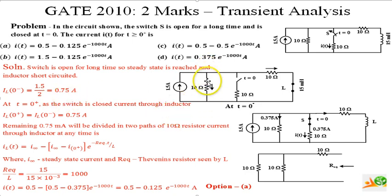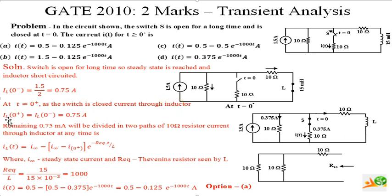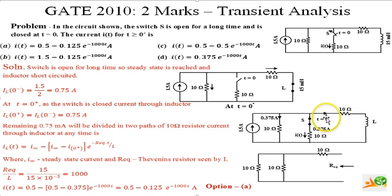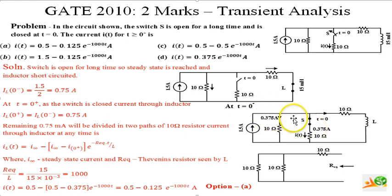At t equals zero plus, as soon as the switch is closed, the current through the inductor i_L(0+) equals i_L(0−), which is 0.75 amperes — the inductor current cannot change instantaneously. The remaining 0.75 amperes now divides into two paths, both having 10 ohms resistance, so each path carries 0.375 amperes.